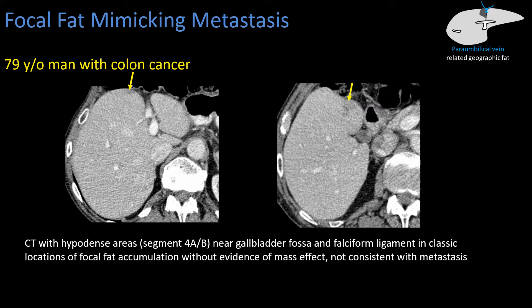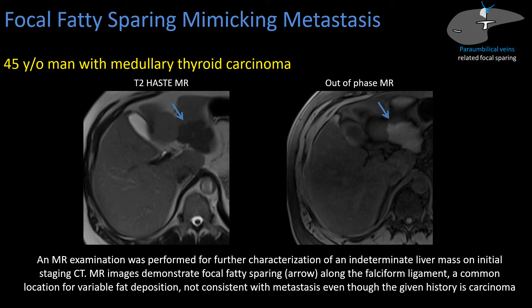This is another example of a steatosis-related entity mimicking malignancy. We have a 45-year-old man with medullary thyroid cancer. We can see that he has diffuse steatosis and this very strange irregular mass-like region of the liver, which was found to be focal fatty sparing. One caveat to calling this focal fatty sparing and not metastasis is that metastases will often spare fat, so it's quite rare to see fat deposition within a metastatic lesion. Just because there's focal fatty sparing doesn't mean the lesion is not real.